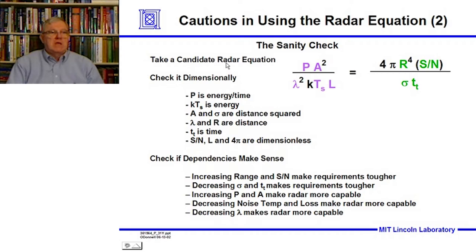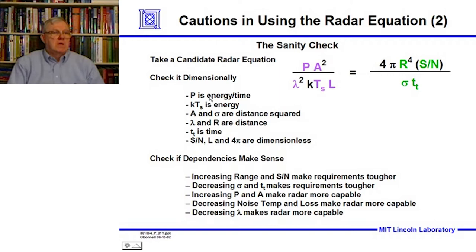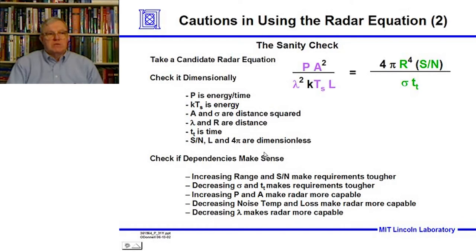One important practice is to do sanity checks. Take a candidate radar system and check it dimensionally — make sure all units are consistent. Verify that increasing range makes the signal-to-noise requirements tougher, and that decreasing cross-section or observation time also makes things harder. These consistency checks confirm you haven't made an algebraic mistake.